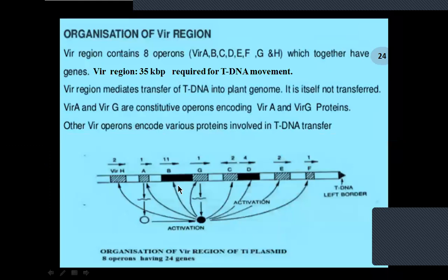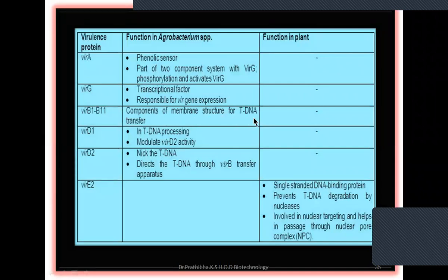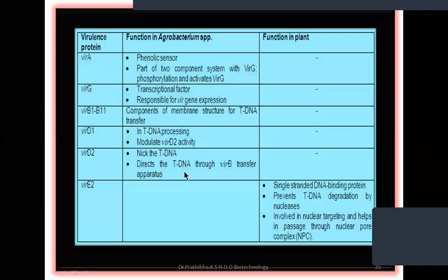VirD2 proteins nick the DNA — cut or cleave the T-DNA — and direct the T-DNA through the VirB transfer apparatus. Once the nick is done, the T-DNA is free and ready to get integrated into the plant genome. Then single strand DNA binding proteins (SSB) protect the T-DNA from any nuclease enzymes. Nucleases degrade the DNA molecule. The binding of SSB protects from degrading enzymes. VirE2 prevents T-DNA degradation by nucleases by binding with the SSB.